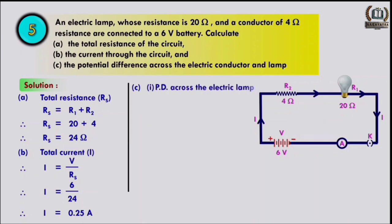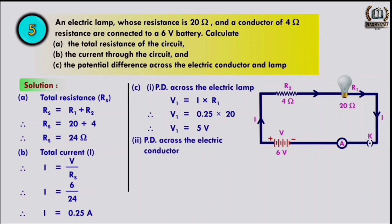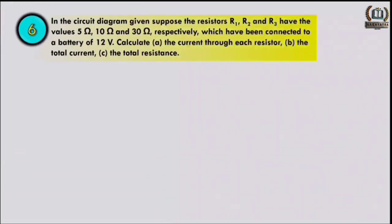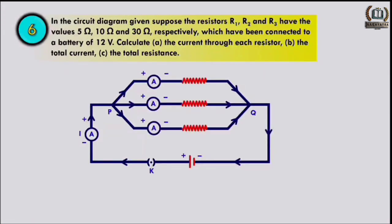For the potential difference across the electric lamp: V1 = I × R1 = 0.25 × 20 = 5 volt. For the potential difference across the conductor: V2 = I × R2 = 0.25 × 4 = 1 volt. Summary: total resistance is 24 ohm, current is 0.25 ampere, V across lamp is 5 volt, V across conductor is 1 volt.